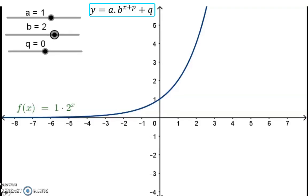As usual, we start with the mother graph, in which the a value is 1, the b value is 2, and the q value is 0.